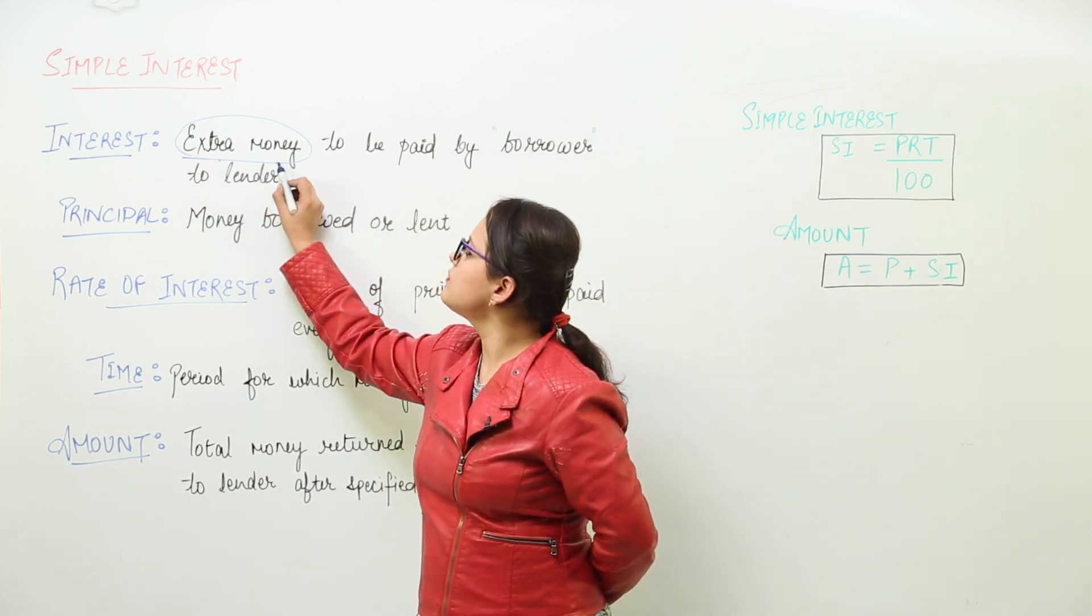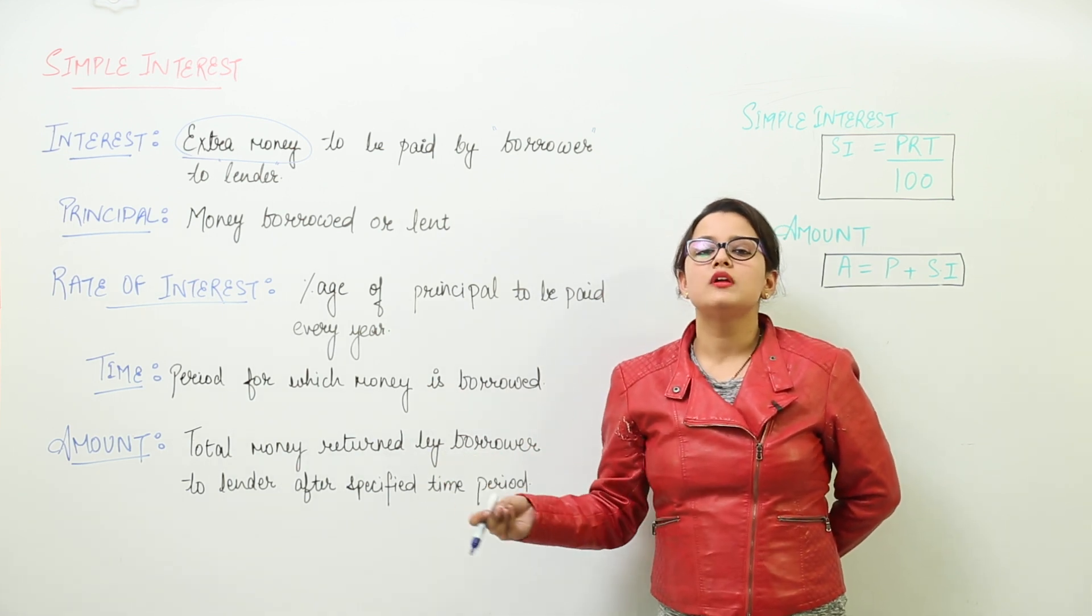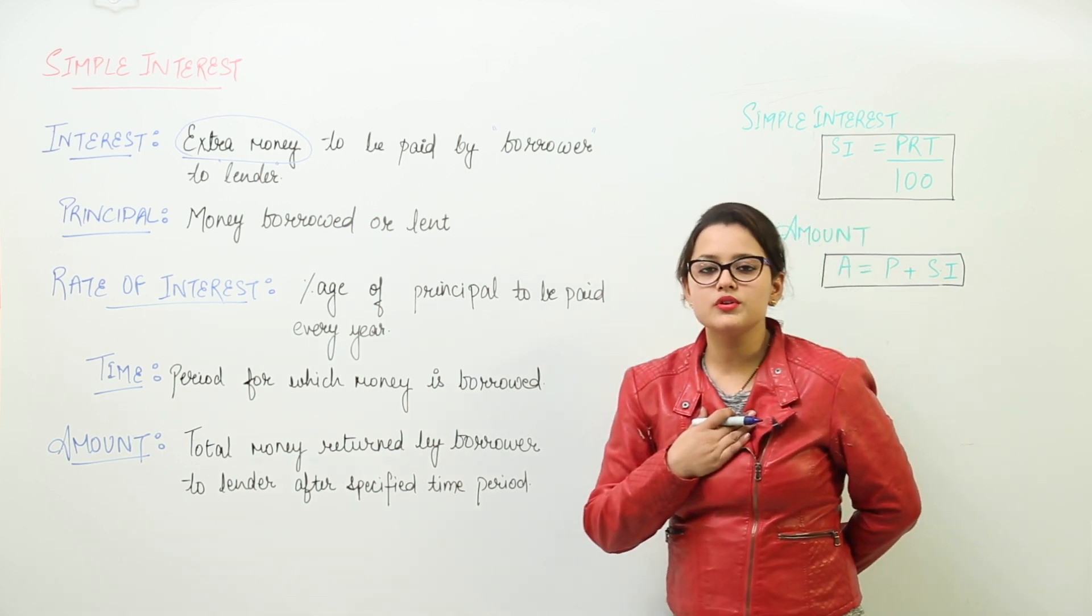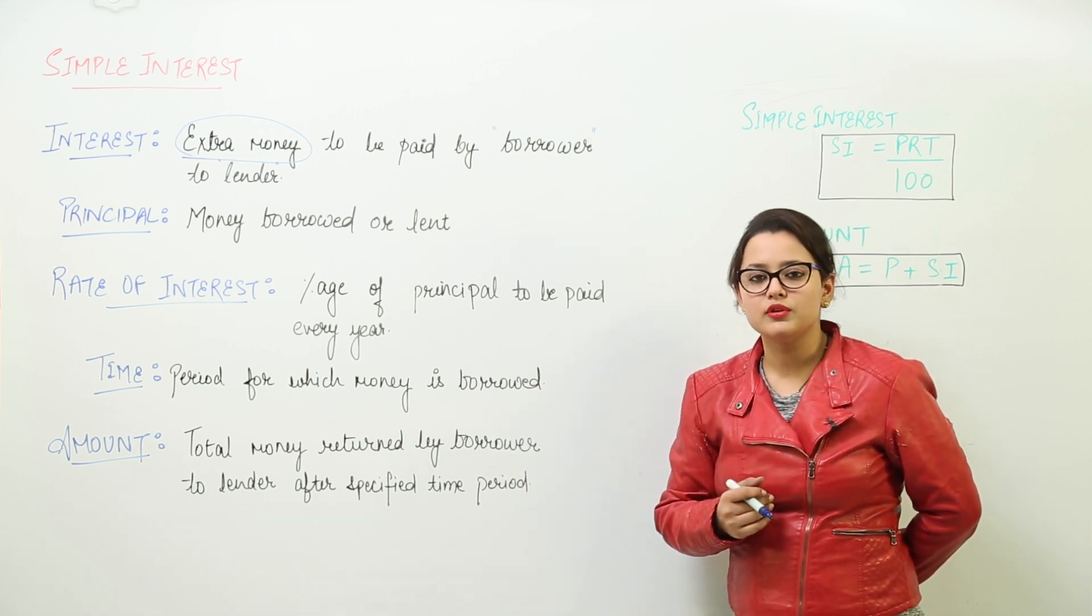Now, who is the borrower? Say for example, I need some money. I need 100 rupees. I asked my friend to lend me 100 rupees. So I am the borrower because I am borrowing money, and my friend is the lender because she is lending me 100 rupees.